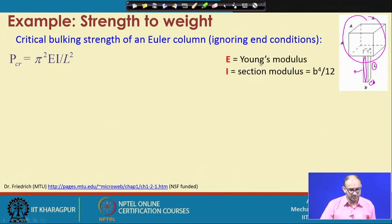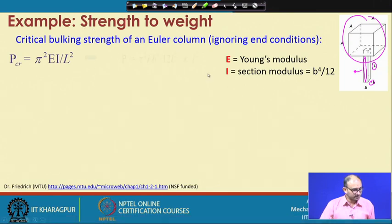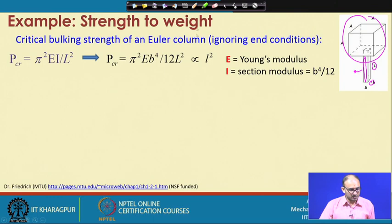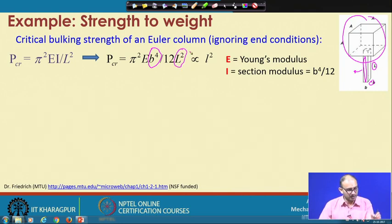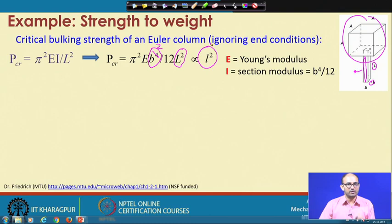What are these parameters? E is Young's modulus, which has no connection with the length scale. I is the second moment of area, or section modulus. Since both cross-sectional dimensions are B, it becomes B⁴/12. So if you substitute these: keeping π² and E as is, you put I = B⁴/12, and L² is also a dimension of this part. We now have B⁴ in the numerator and L² in the denominator. Since B and L are both length scales, this whole expression behaves as L² in terms of dimension.